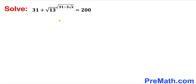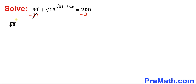Let's get started with the solution. The first step is to subtract 31 from both sides — the 31 and negative 31 cancel out. On the left hand side we are left with the square root of 13 raised to the power of square root of 31 minus 3 times square root of x, which equals 169.